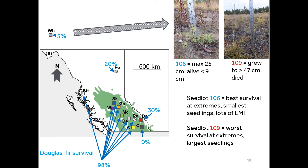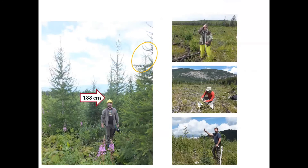We've been back to some of those sites to see what's going on. Here's me and Brendan Twieg doing field work — these are six-year-old larch trees and Brendan is quite tall, so you can see how big these larch are. Inside the orange circle some of them are already producing cones. Growing outside their natural range, we're often finding lots of mycorrhizal colonization on these trees — and in some cases they're even producing seed at six or seven years, which seems rather quick.